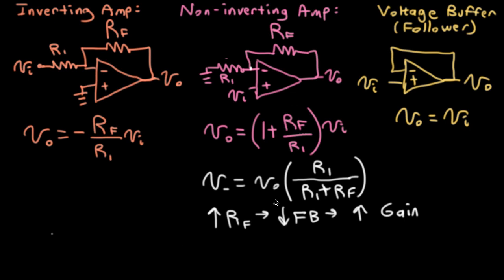So it makes sense that RF is in the numerator. Now, what happens if we were to increase R1? Well, this factor here is a number that's less than 1. And as you increase R1, it's going to get closer and closer to 1. So that means that the amount of feedback is increasing, which should lower the gain.